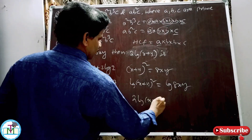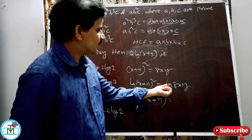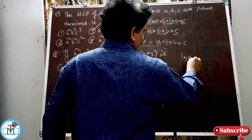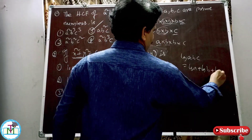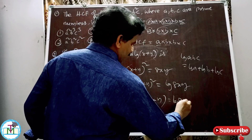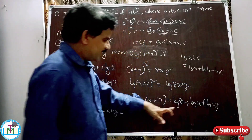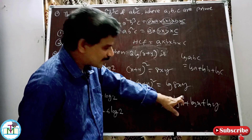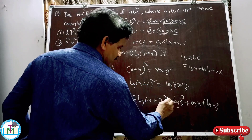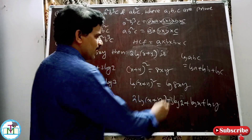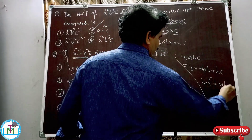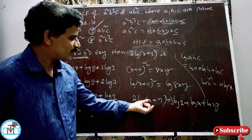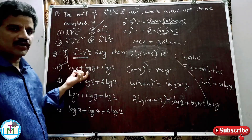Now 2log(x+y) = log(8xy). Using log(ABC) = log A + log B + log C, this becomes log 8 + log x + log y. Since 8 = 2³, and using log(xⁿ)=n·log(x), log 8 = 3log 2. Therefore 2log(x+y) = log x + log y + 3log 2. Option 1 is the right answer.